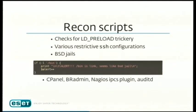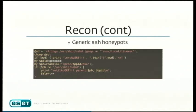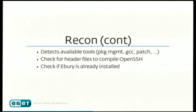The reconnaissance scripts are very interesting. They check extensively for anything LD_PRELOAD-related — since most low- or high-interaction honeypots use LD_PRELOAD tricks, this check helps avoid investigation. They check for various restrictive SSH configurations and won't deploy in those environments. They check for BSD jails, cPanel, br, admin, netgo, and whether auditd is activated. For generic SSH honeypots, they look in strings for SSHD: if certain strings like /usr/local/libexec appear — typical of a jail — they bail out.